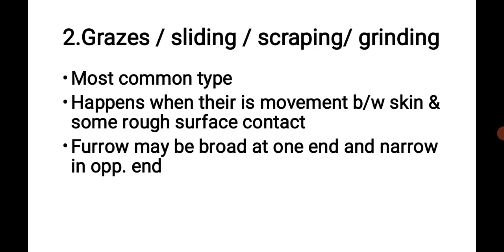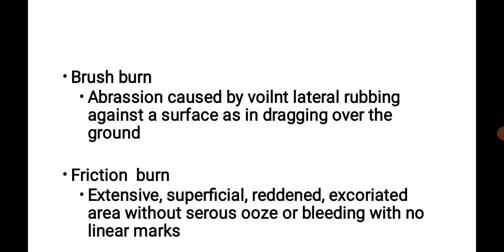The next type of abrasion is grazes, also called sliding, scraping, or grinding. It is the most common type of abrasion, happening when there is movement between skin and a rough surface. The furrow may be broad at one end and narrow at the opposite end. A brush burn is caused by violent lateral rubbing against a surface, as in dragging over the ground. A friction burn is an extensive, superficial, red, and excoriated area without serous ooze or bleeding, with no linear marks.